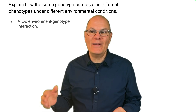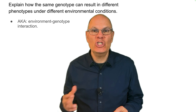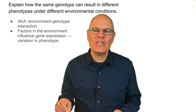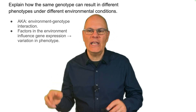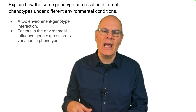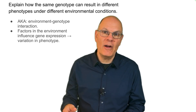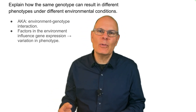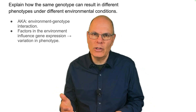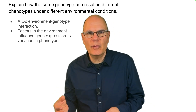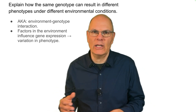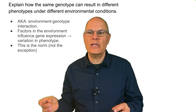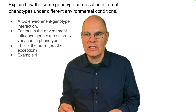This is also known as an environment-genotype interaction. What happens is that factors in the environment influence gene expression, and that leads to variation in the subsequent phenotype. Basically, what it's saying is something fairly well known: genes don't determine everything. Genes interact with the environment, and note that this is the norm, not the exception.